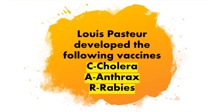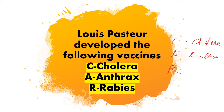Louis Pasteur also contributed by developing three vaccines, remembered with the mnemonic CAR. C for Cholera vaccine — given by him. A for Anthrax vaccine — given by him. R for Rabies vaccine — given by him. This is all about Louis Pasteur.